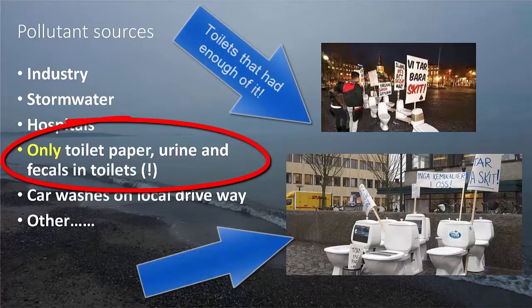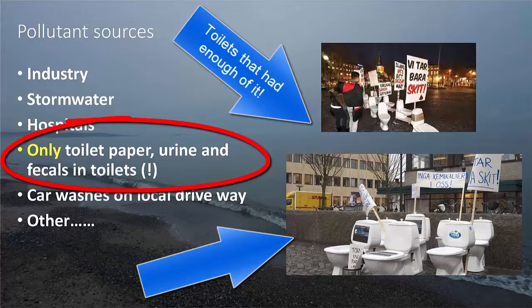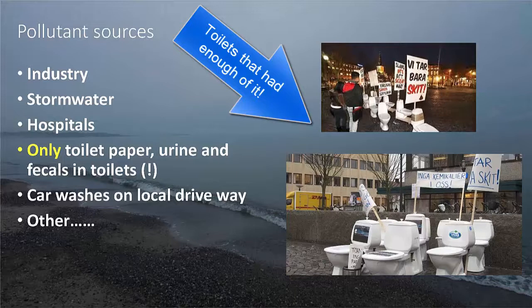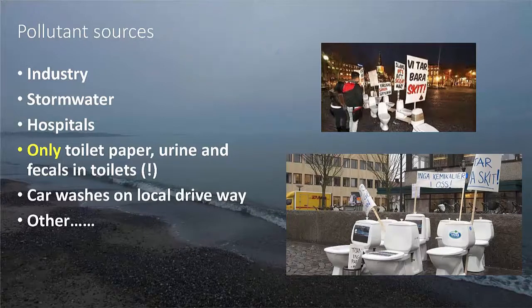Getting back to our homes, one of the things we always have to think about is only toilet paper, urine, and fecals in the toilet — no colors, no plastic, no wipes, etc. Because that will severely damage the wastewater quality before it reaches the wastewater treatment plant. This is especially important now that we are looking at using treated sewage water as a raw water source for drinking water production — we want to keep pollutants as low as possible before the treatment plant.